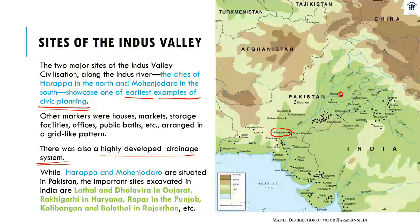It seems that human civilization perhaps goes in circles — we reach a level of civilization and then destroy ourselves, as human beings are destructive in nature. Harappa and Mohenjo-Daro are situated in Pakistan. Then we have Lothal and Dholavira. Dholavira is in the Kutch region.